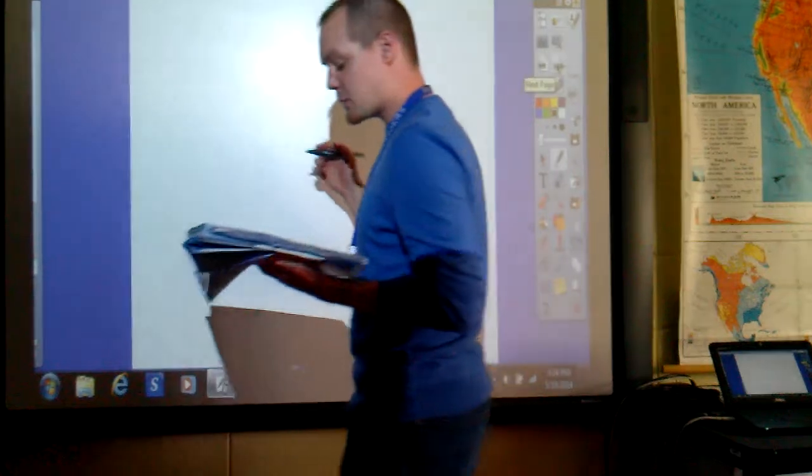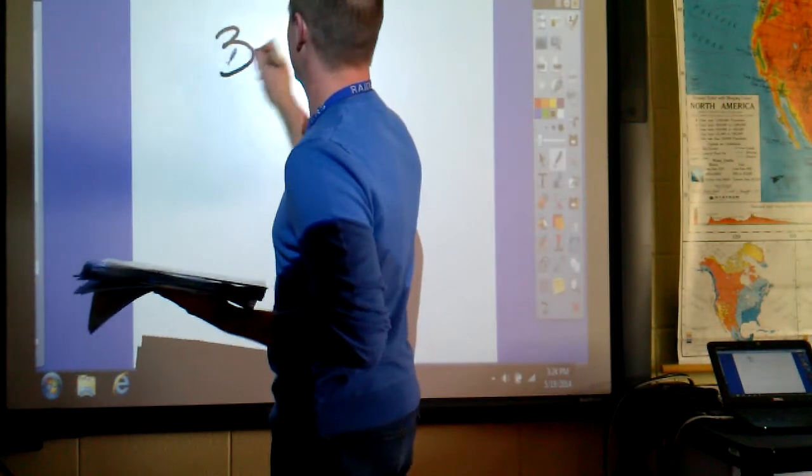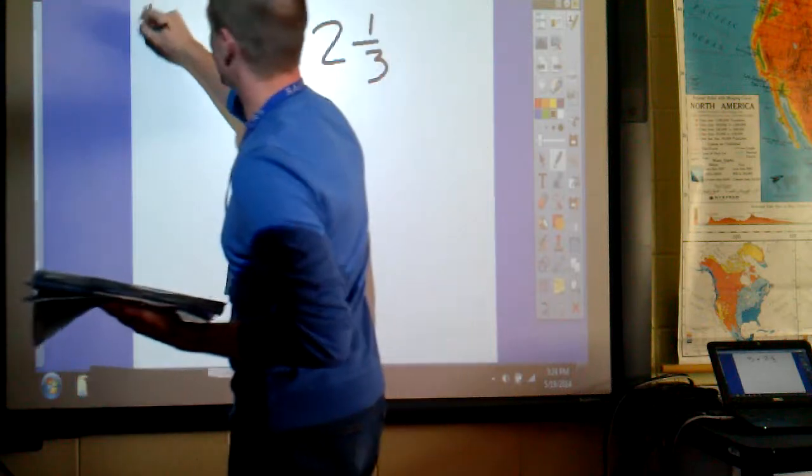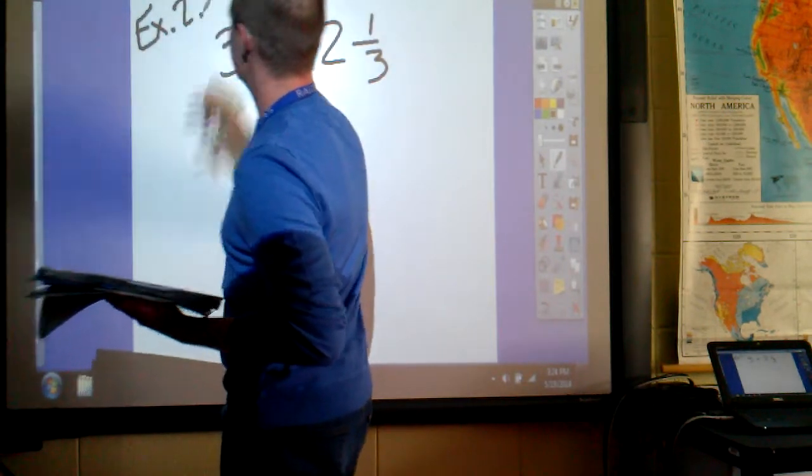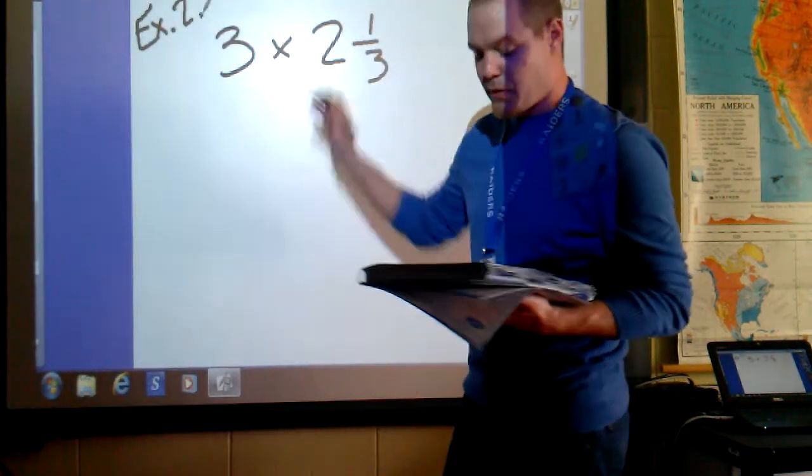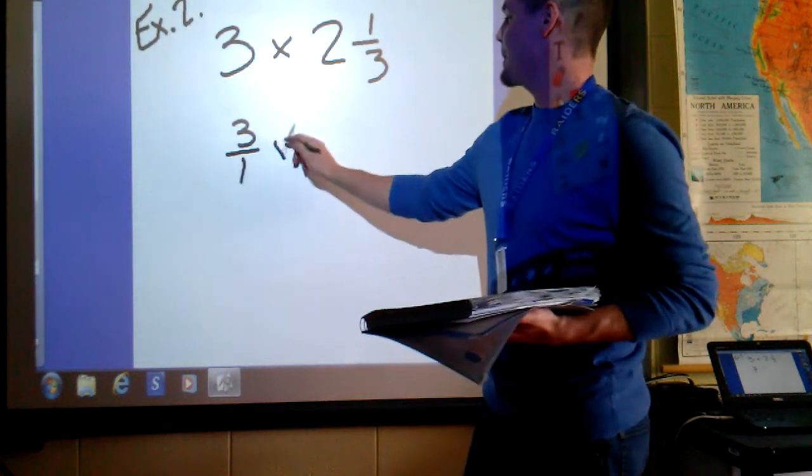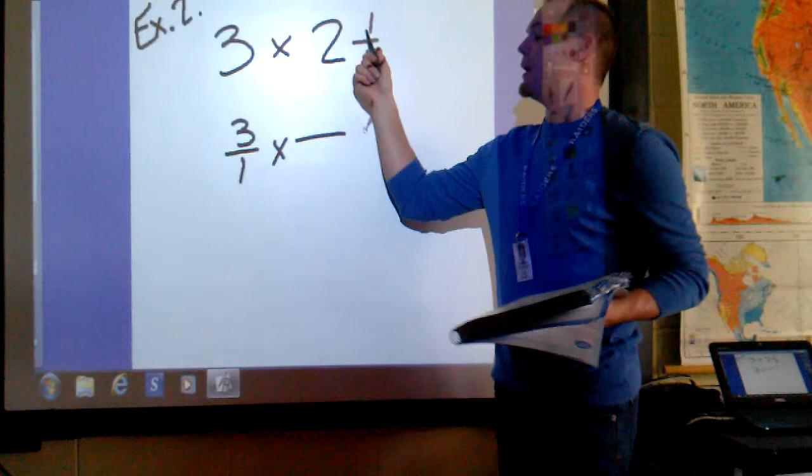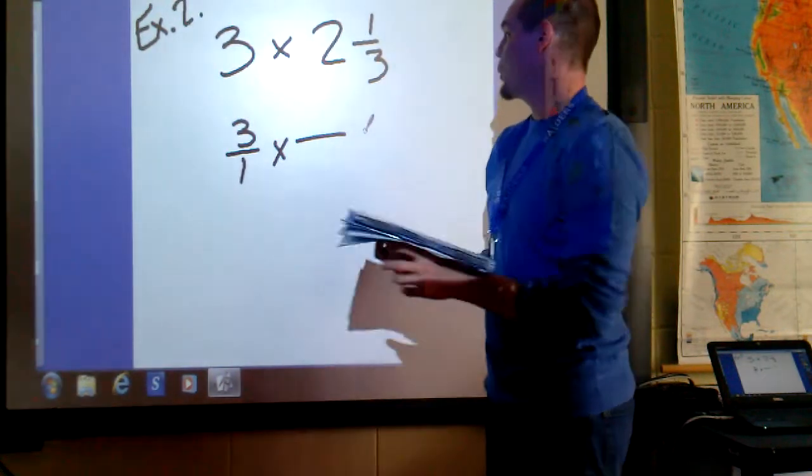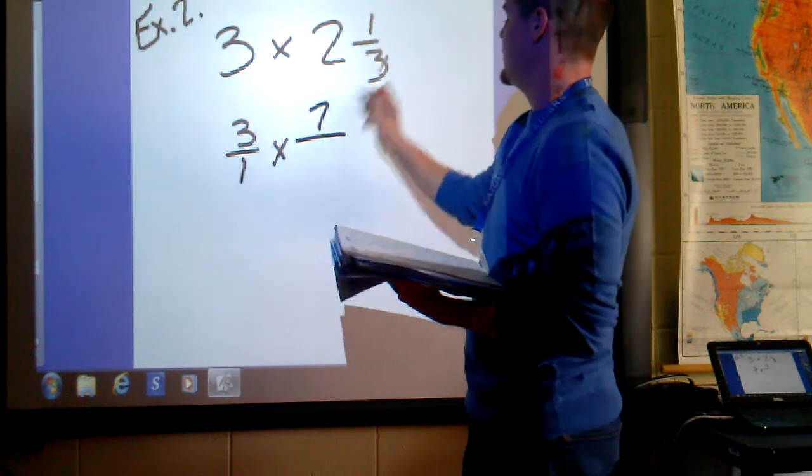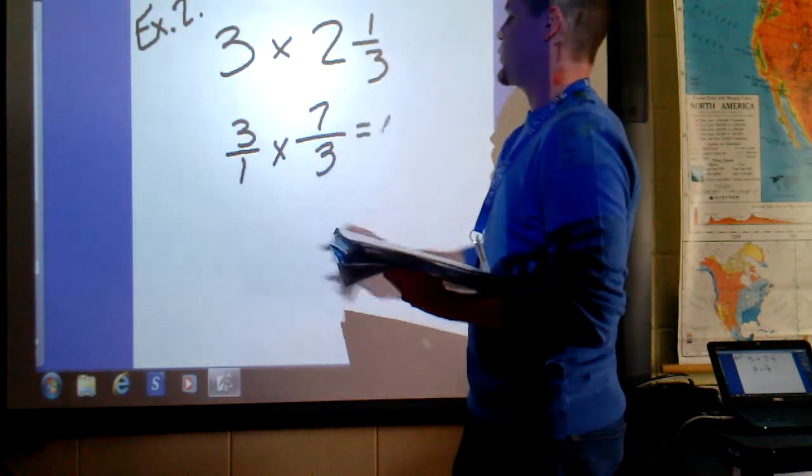Let's look at the next problem. We have the whole number 3 times 2 and 1 third. This is example 2. The number 3, we just put it over 1. Now we need to multiply by an improper fraction. So, 2 times 3 is 6. Plus 1 is 7. The denominator of 3.